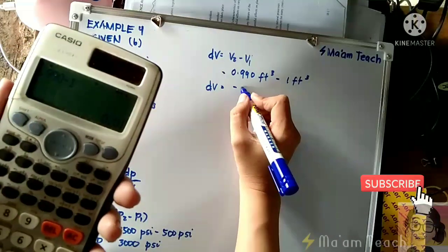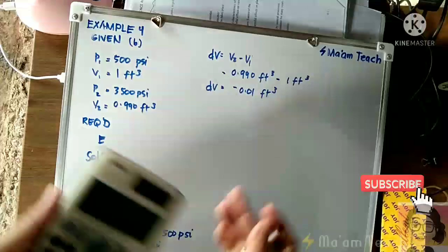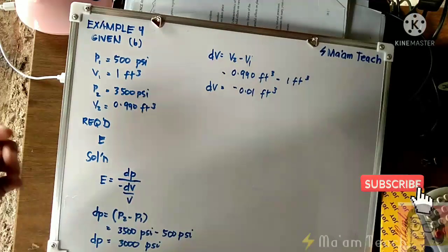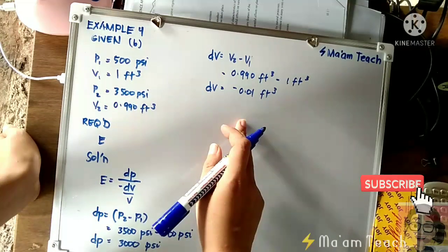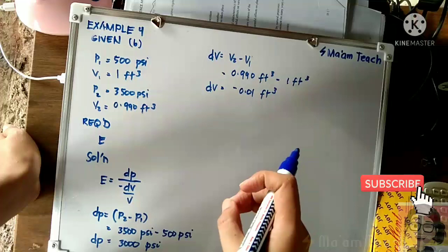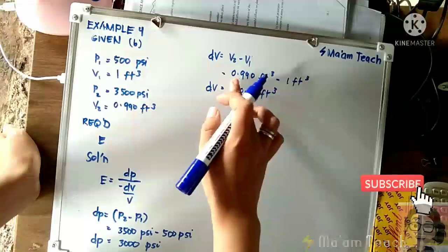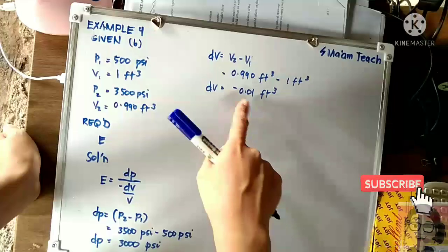That is negative 0.01. So that negative there indicates that our volume decreased - from 1 foot it became 0.990.